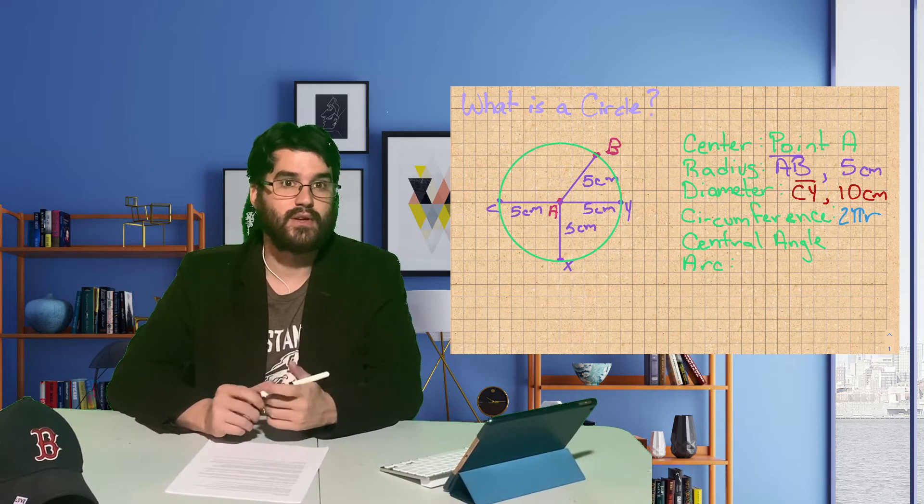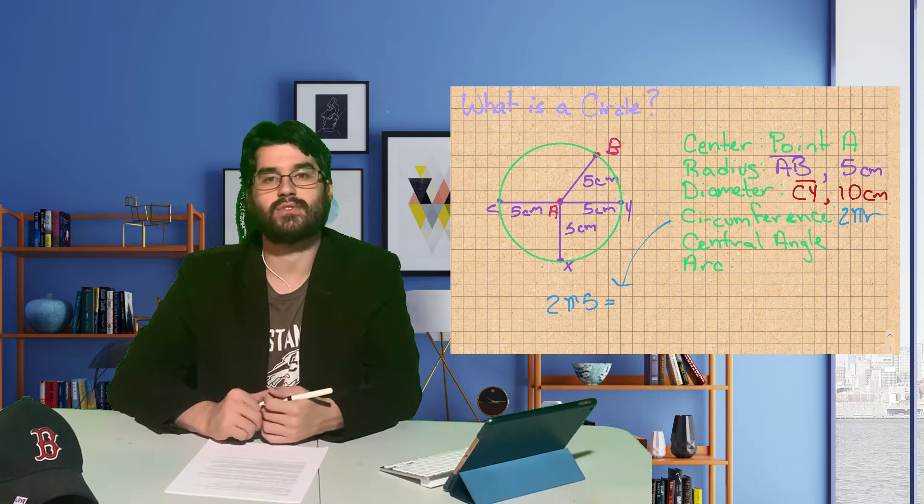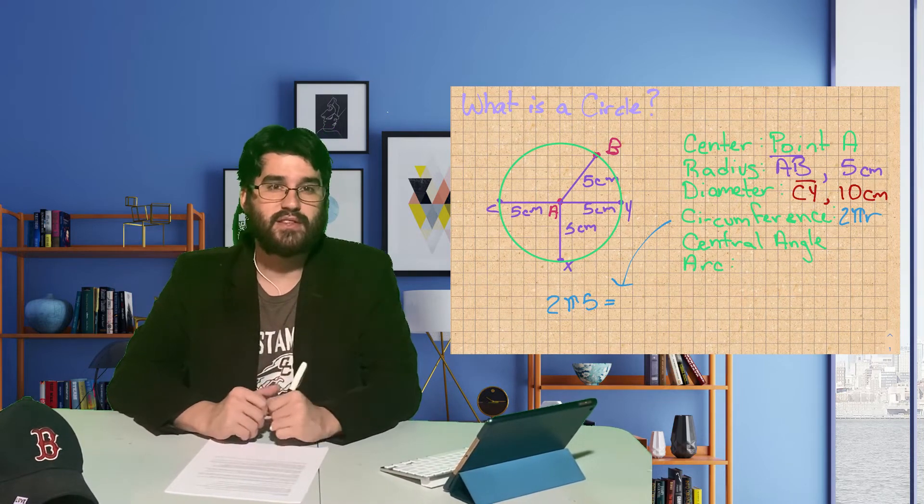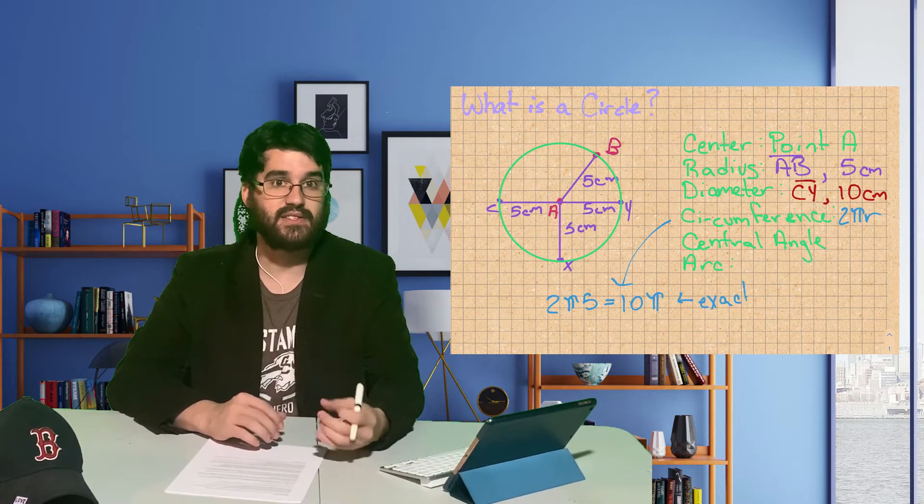So in this circle, if we use 2πr, that gives us the formula circumference equals 2 times π times 5. Now, we can simplify the 2 times 5 to get us 10 times π. This is what we call the exact answer.